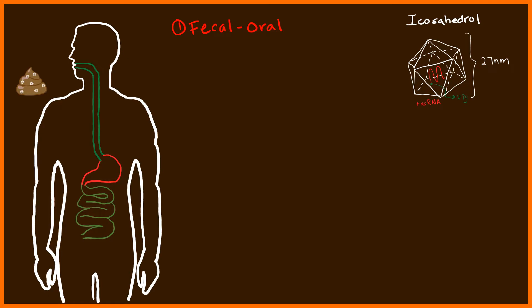This could be fecal matter on their food, on their hands, or they may come in contact with an individual who has this matter on them. The virus is eventually ingested and tends to go straight through the stomach and lands into the intestine, where the first part of the pathophysiology begins.